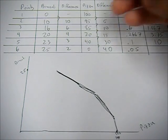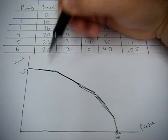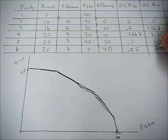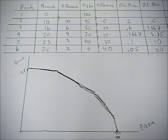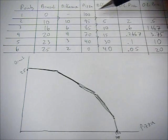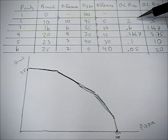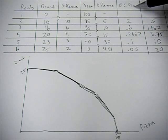And so our last opportunity cost of pizza is going to be that 2 over 40. So we have to give up 0.05 broccoli in order to get a pizza, and that slope is very close to 0. The inverse of that is 20. We have to give up 20 pizza to get a broccoli.